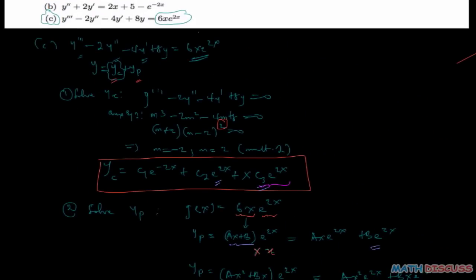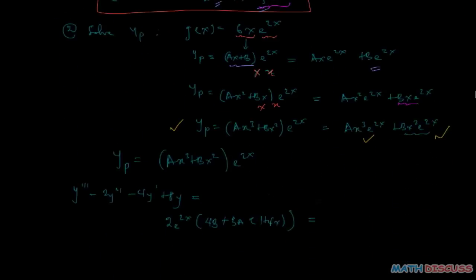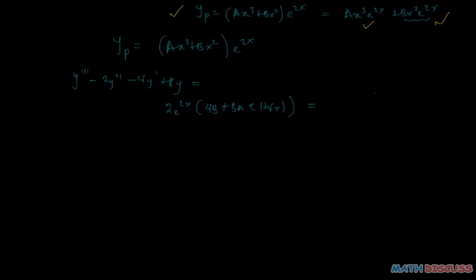Now the right hand side that we are given is 6x e to the power 2x. So equals 6x e to the power 2x. Now what you need to observe is that the question here, what we have here is e to the power 2x and we also have e to the power 2x, so what's left we equate them to each other.